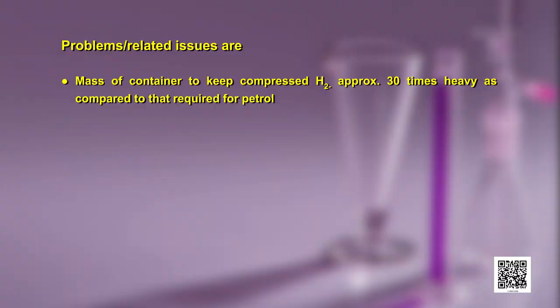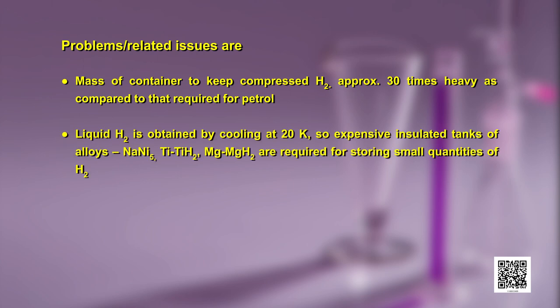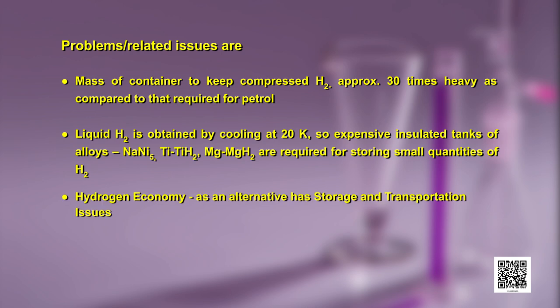The problems related to the use of dihydrogen as a fuel include the mass of the container required to keep the compressed dihydrogen, which is roughly 30 times as heavy as compared to the container required for storing petrol. Another issue is use of liquid hydrogen — to store it, we have to cool it to 20 Kelvin temperature, requiring expensive insulated tanks of alloys such as NaNi₅, Ti, TiH₂, Mg, and MgH₂ even for small quantities.